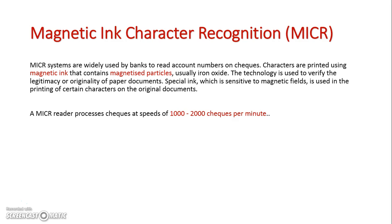This ink is specifically used to verify documents which it is printed on. Basically, it's entered into an MICR reader, and then these documents all go through the reader, and as they're read, they get verified that they are authentic. MICR readers generally process at speeds of 1,000 to 2,000 checks per minute.